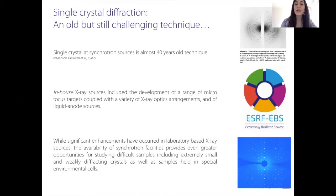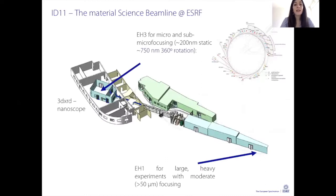As Brian introduced, I work at the ESRF and in particular I work at ID11, which is the materials science beamline where we perform several kinds of experiments. ID11 has two experimental hutches and three different experimental stages. We have EH1, which is meant for large, heavy experiments with moderate focusing located in the experimental hall, and then we have in the extension building EH3 where we range from micro to sub-micro focusing, down to 150 to 100 nanometers, with two experimental stations.